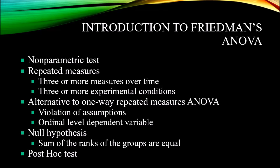It requires a post-hoc test to find out exactly where the difference is. The post-hoc test for Friedman's ANOVA would be the Wilcoxon signed-rank test. The Wilcoxon signed-rank test is similar to Friedman's ANOVA, except it only uses two measures over time or two experimental conditions, making it ideal for pairwise post-hoc comparisons.